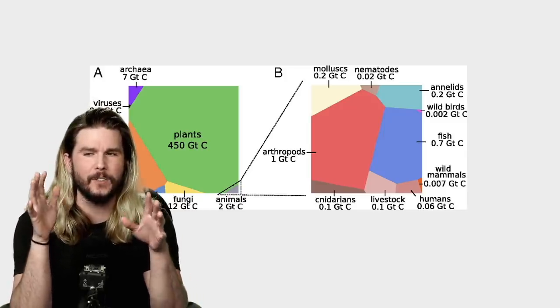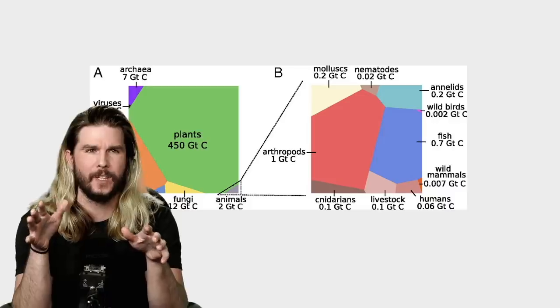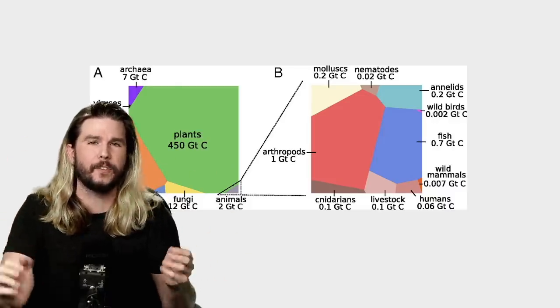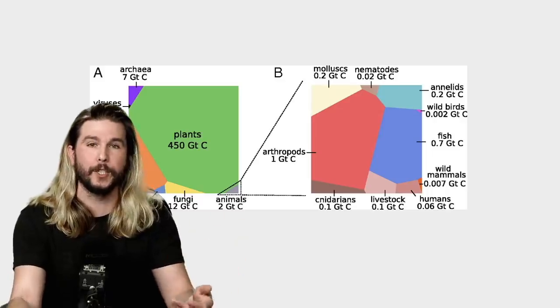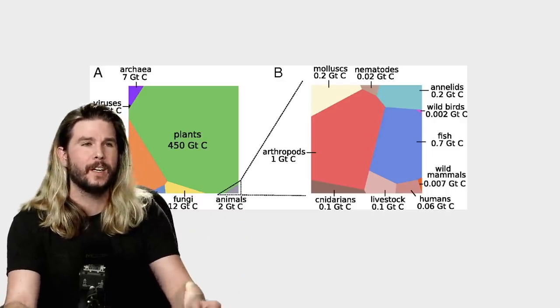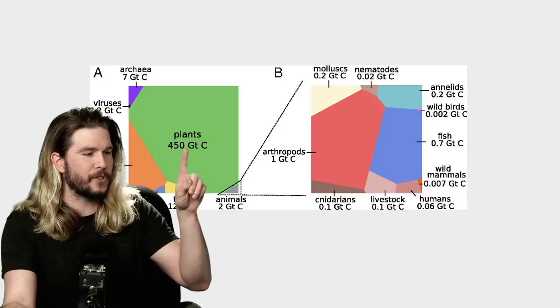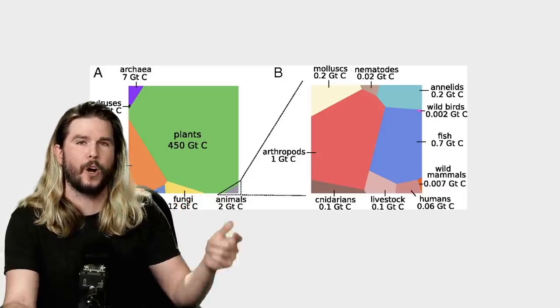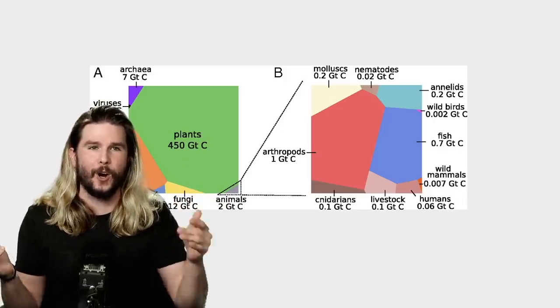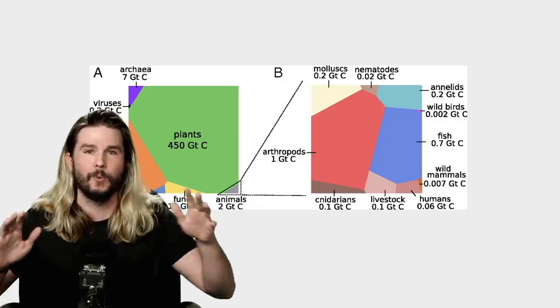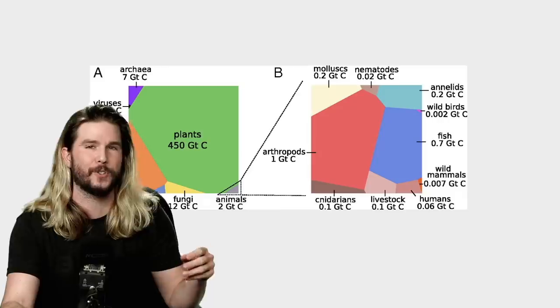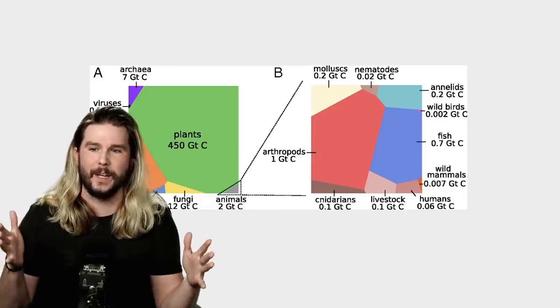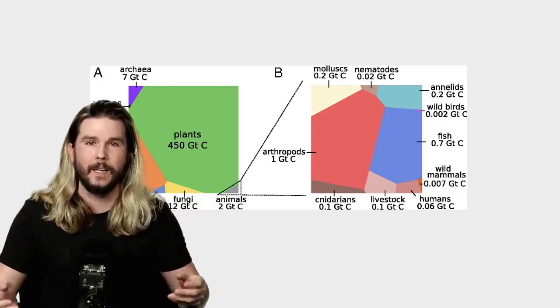That is the planet Earth, and how they did that was use very good guesstimates of all the tonnage. The figures here you're seeing are gigatons of carbon. They use this because carbon is associated with all living things and it's what makes something organic. It's just easier to total that up instead of all the other things that might make up a living thing.